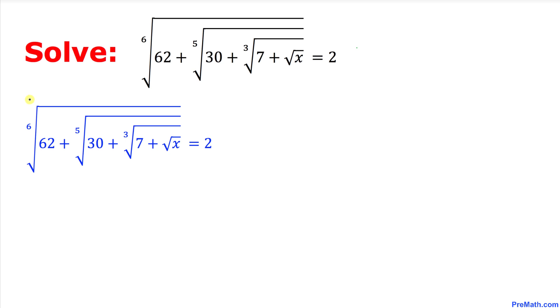So let's undo this sixth root by taking the power 6 on both sides. This sixth power and this sixth root they undo each other.